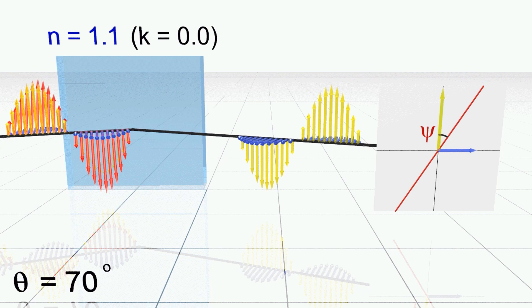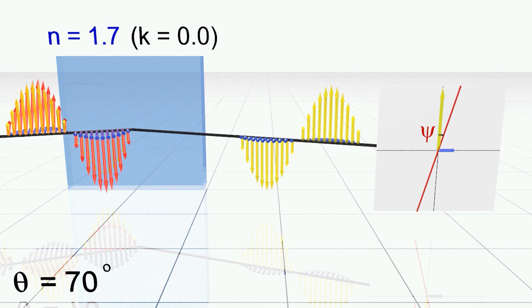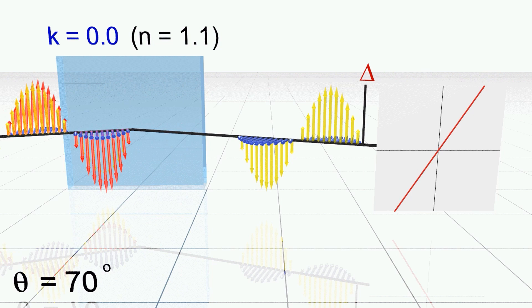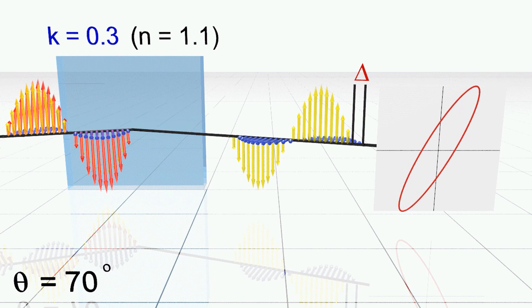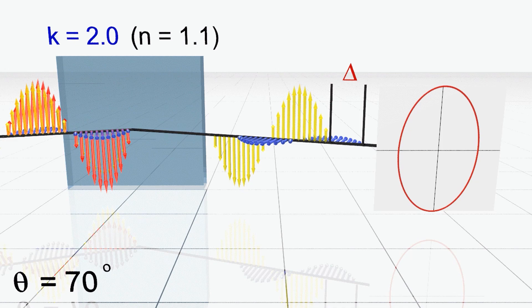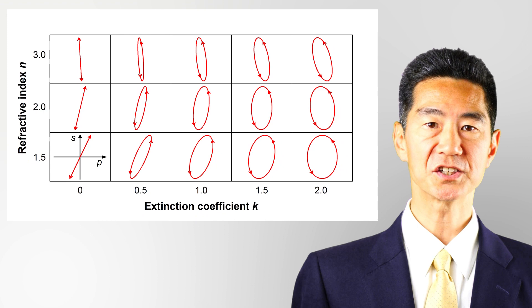Now we show how delta and psi change with the optical constants of a sample. When the extinction coefficient of the sample is 0, reflected light is linearly polarized with delta of 0 or 180 degrees, and psi is determined by the relative amplitude of the p- and s-waves. When the refractive index of the sample is increased, the amplitude of the reflected p-polarized wave gradually decreases, so the psi value becomes smaller, and the change in n can be detected as a variation in psi. Next, we fix n to 1.1 and increase the extinction coefficient. The light absorption in the sample changes delta significantly, and as k increases from 0, the polarization of the reflected light changes from linear to elliptical polarization. So the change in k can be detected as a variation in delta.